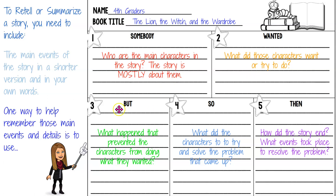Somebody wanted, but — now here's where we try to solve the problem. What did they do to try and solve the problem? So they did this. And then the last piece of our summary is 'Then.' How did our story end? What event or events took place that really resolved the problem or wrapped up the story? So, fourth graders, I'm thinking about five things — not every detail from my story, not every little piece.